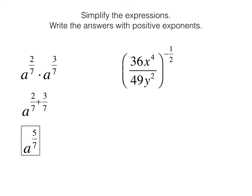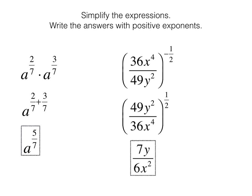In the next example, because of the negative power, let's flip the fraction to make it a positive 1/2. Remember, 1/2 just means square root. So the square root of your numerator is going to be 7y. The square root of your denominator is going to be 6x squared.